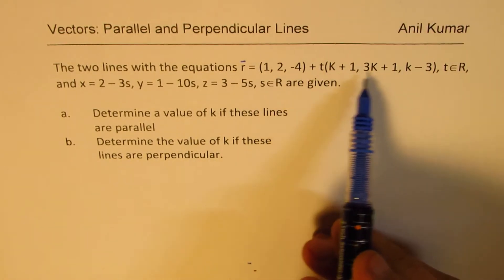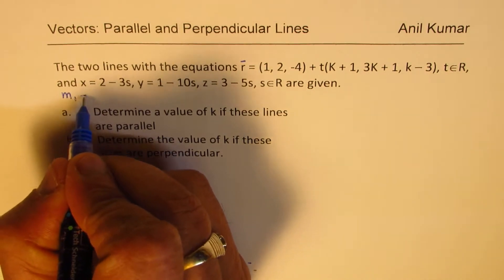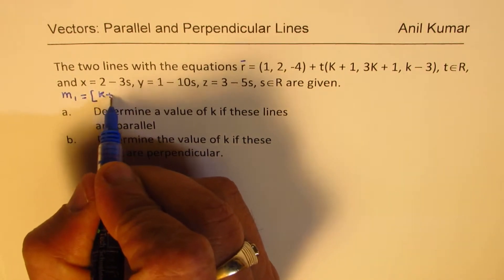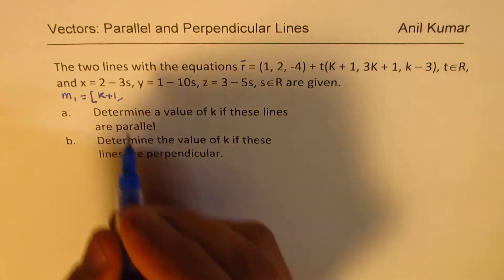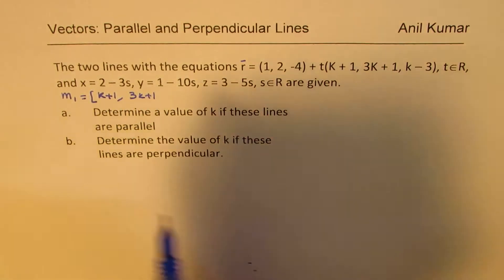So let's find what are the direction vectors for each. For the first line, the direction vector is (k+1, 3k+1, k-3).